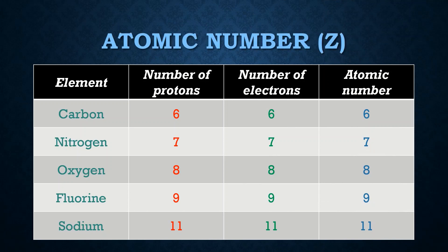The next topic is atomic number, represented by the capital letter Z. The atomic number is equal to the number of protons in an atom, which also equals the number of electrons, as shown in the diagram.